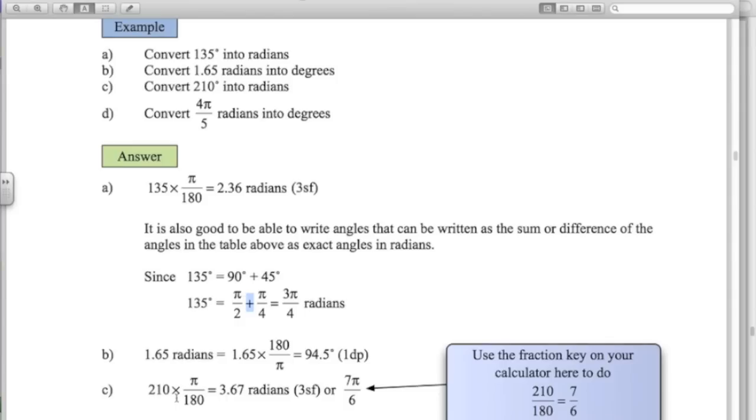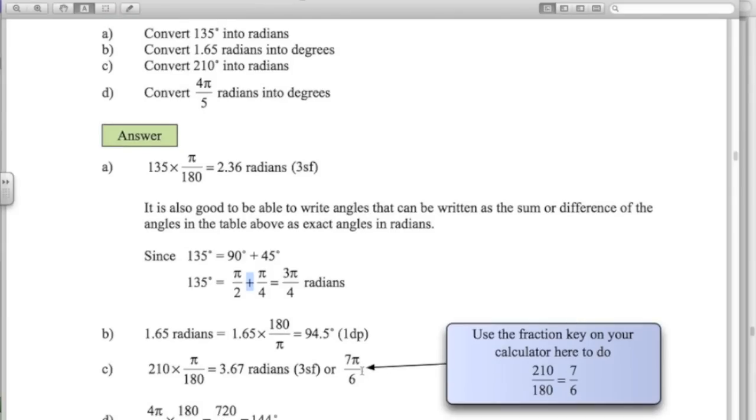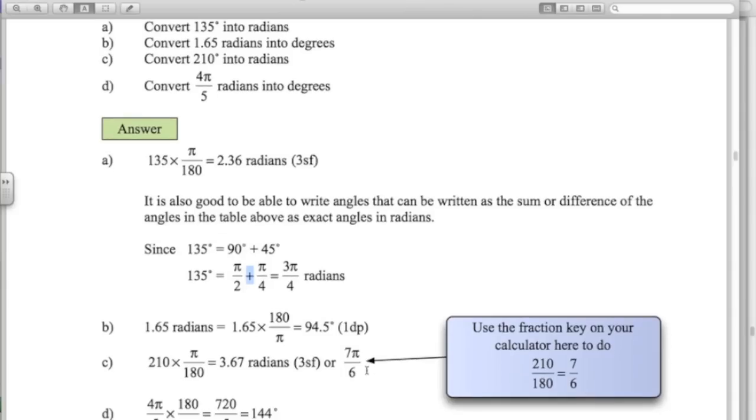210 degrees into radians times by pi over 180 is 3.67. Or if you use the fraction key on your calculator, 210, fraction key 180. And it'll give you 7 over 6 pi. So that's the exact angle.